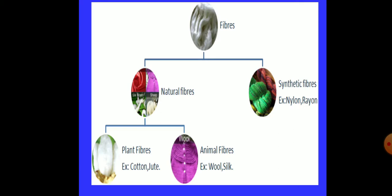In natural fibers, for example, cotton, jute, wool, and silk. Cotton we are getting from cotton plant seeds, jute from skin of the stem, and silk from silkworm. Now in this chapter we are going to learn about synthetic fibers.